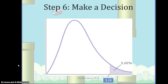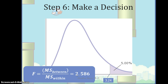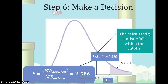Our last step is making a decision — step six. We determined our critical value in step four as 3.24, which cuts off 5% in the tail. Our computed F statistic is 2.586, which falls within the cutoffs. Therefore, we fail to reject the null hypothesis, because the statistic is not far enough from the mean. It's likely we could get this result due to sampling from the same distribution.